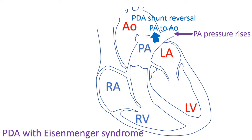For a variable period of time, depending on the size of the shunt, the lung accommodates the increased flow by pulmonary vasodilation. In this phase, there can be flow-related hyperdynamic pulmonary hypertension which is reversible after closure of the defect.